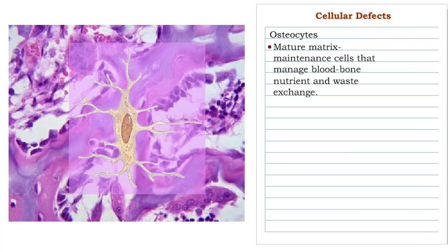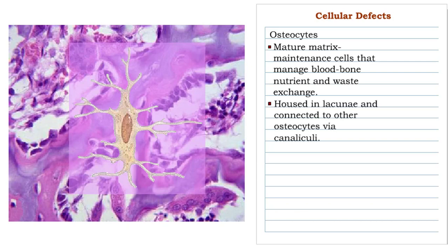Osteocytes are mature bone maintenance cells that manage cellular activities between bone and blood. Each osteocyte occupies a lacuna, a space formed by the synthesis of osteoid. Very fine tunnels, called canaliculi, connect each cell to the matrix and other osteocytes in nearby lacunae. Osteocytes are also less active with increasing age.